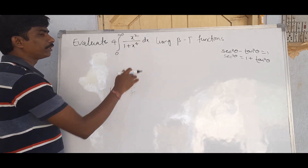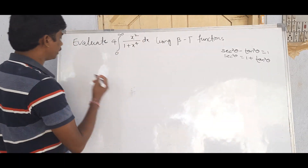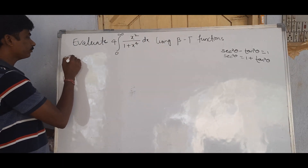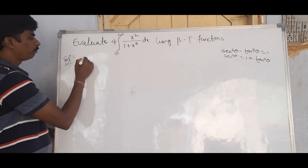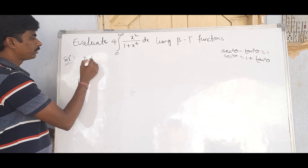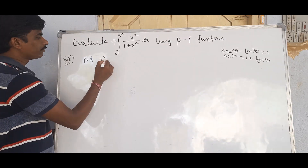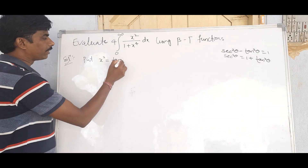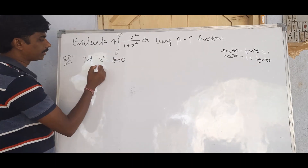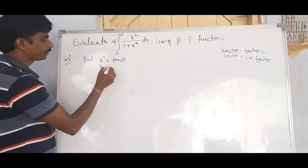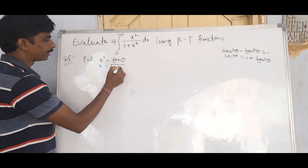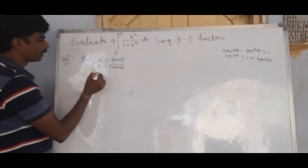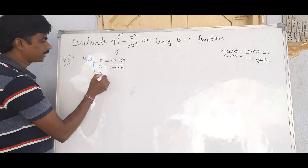Put x² equal to tan θ. Therefore x equals √(tan θ). Now we differentiate: 2x dx equals sec² θ dθ.